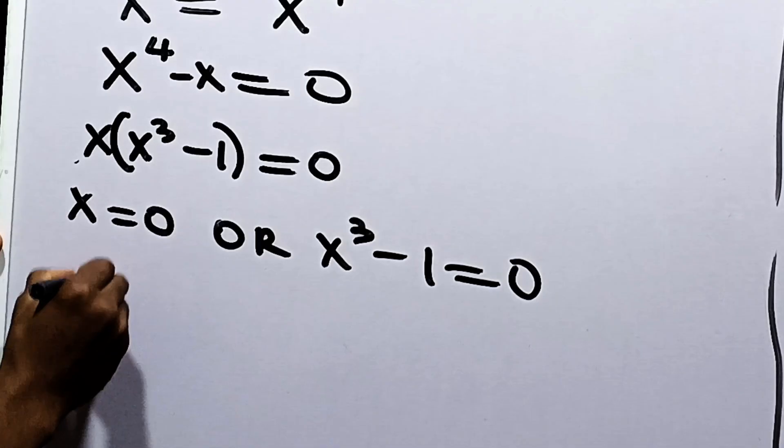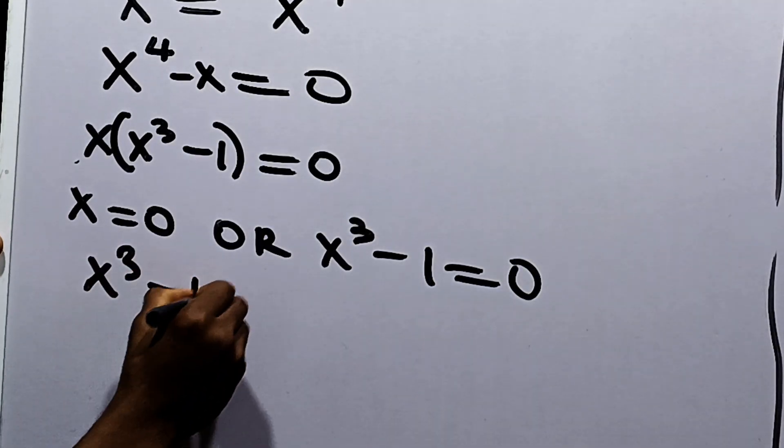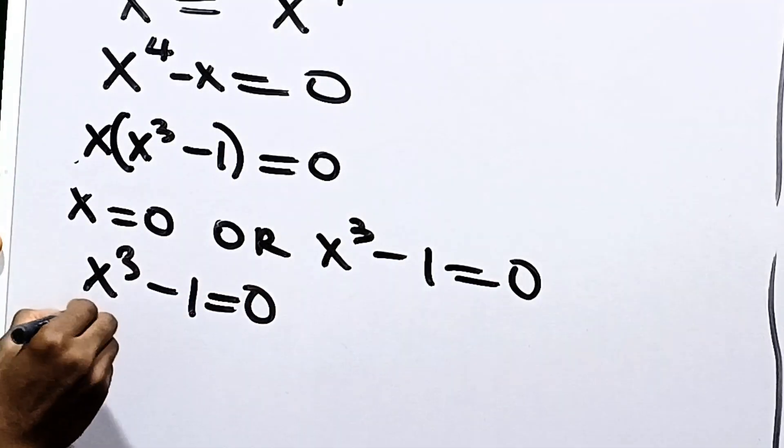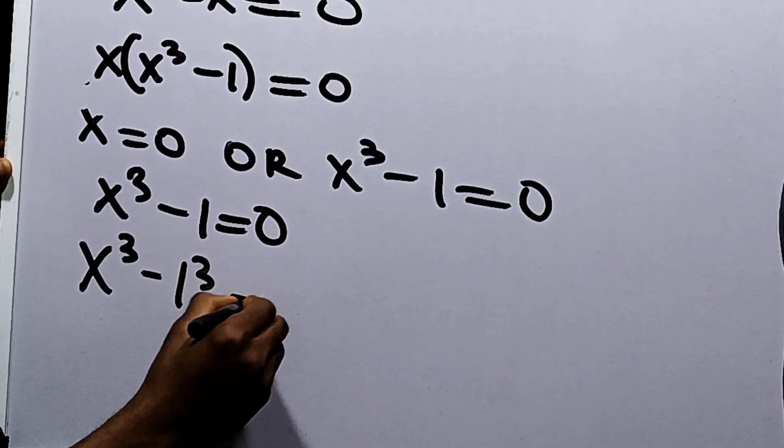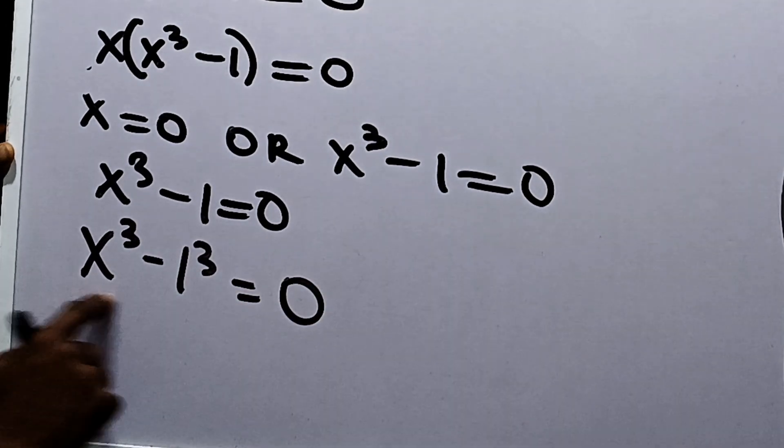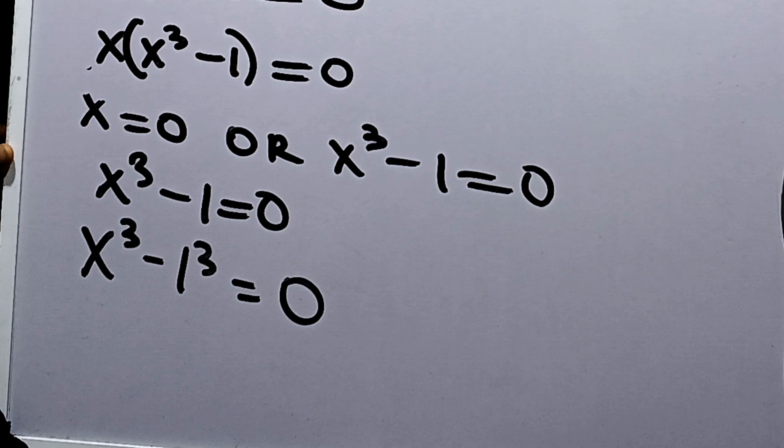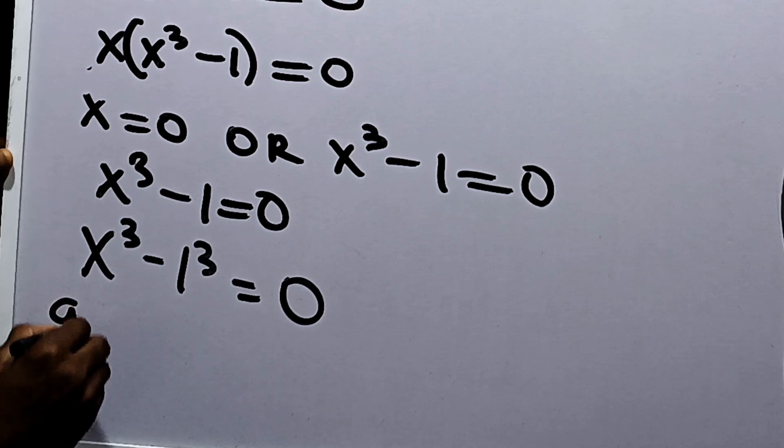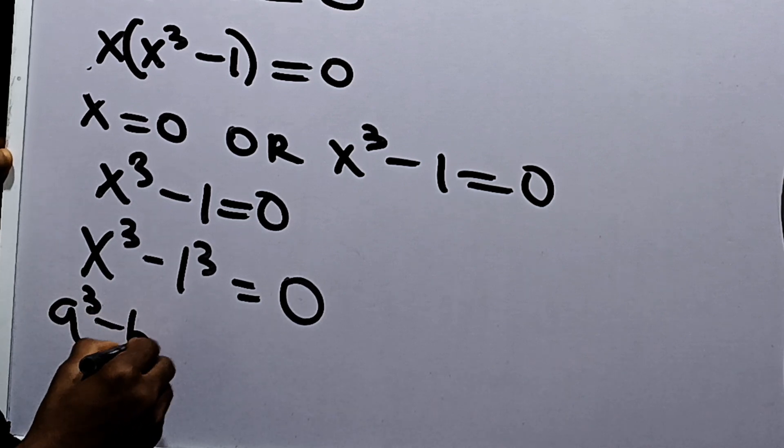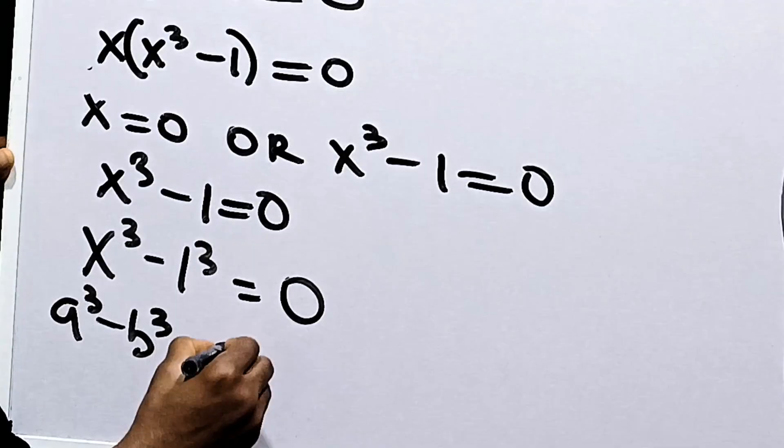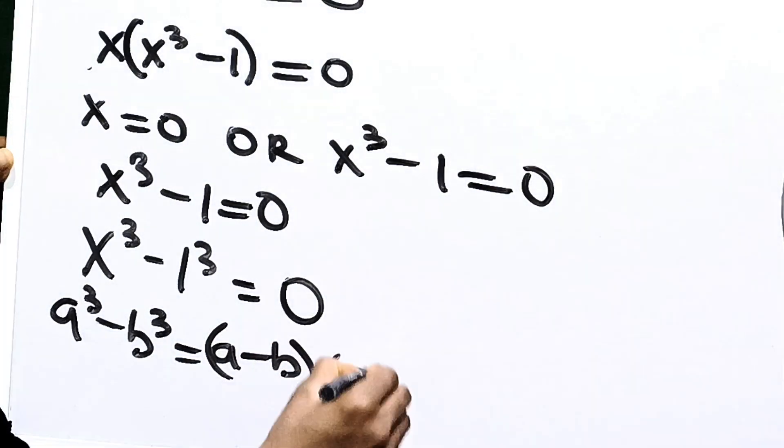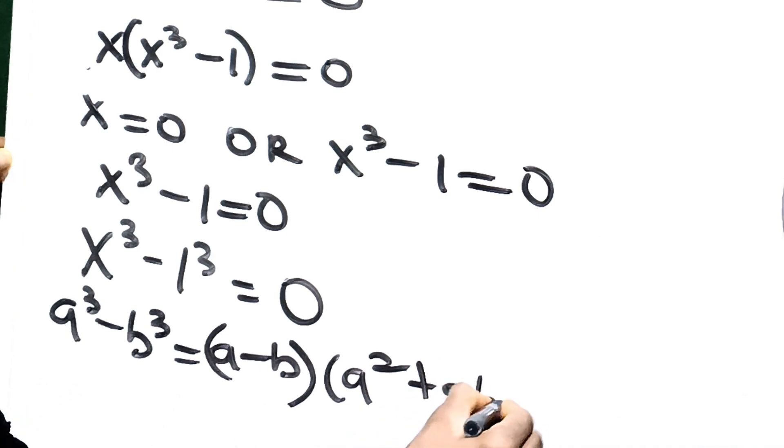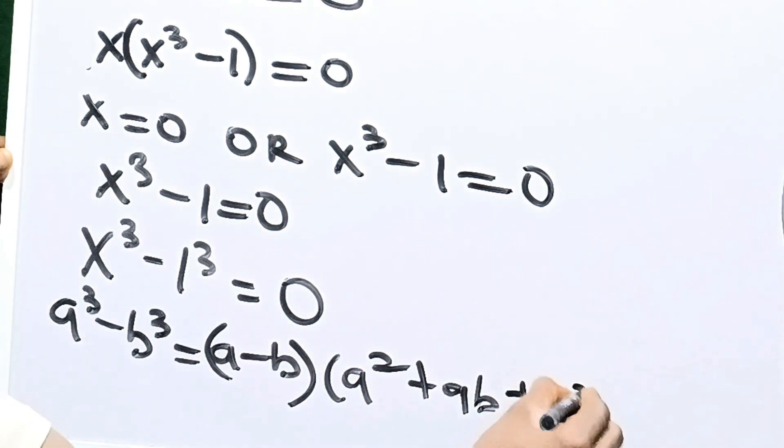Now, from here, let's solve this. We have x cubed minus 1 to be equal to 0. Now, we can say that this is the same thing as x cubed minus 1 cubed to be equal to 0. If this is the case, we can use the difference of 2 cubes. So we can say that a cubed minus b cubed is equal to a minus b into a squared plus ab plus b squared.